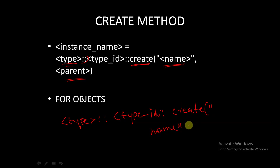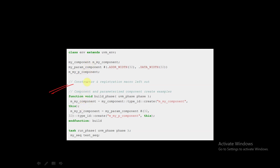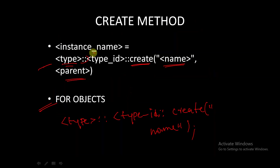For objects there is no hierarchy, so we don't pass the parent argument — that is only used for components. This create method is used in the build phase, which we will discuss in the next session. The type_id is created internally by the factory itself — it is a unique ID assigned to every registered component or object.